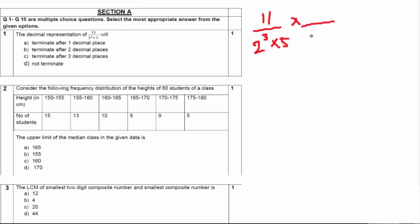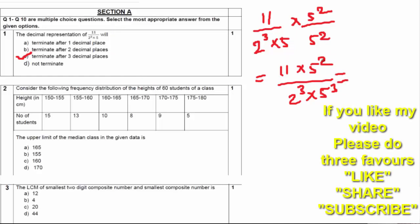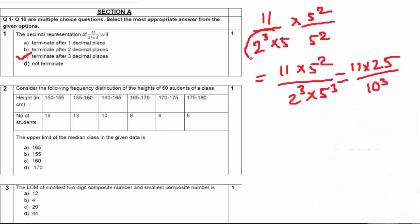We have to multiply this with 5 squared. So: 11 into 5² upon 2³ into 5³, which gives directly 10 raised to 3. Without even calculating, we can give the answer by looking at the highest power of 2 and 5 — the degree here is 3. So this will terminate after 3 decimal places. We can verify: 25 into 11 in the numerator and 10 cubed in the denominator means we keep 3 decimal places. So the answer is it terminates after 3 decimal places.